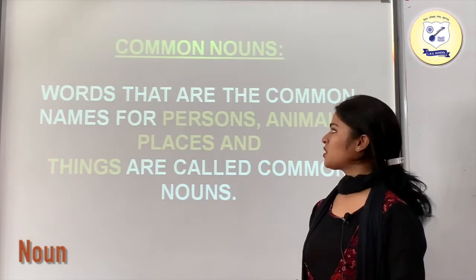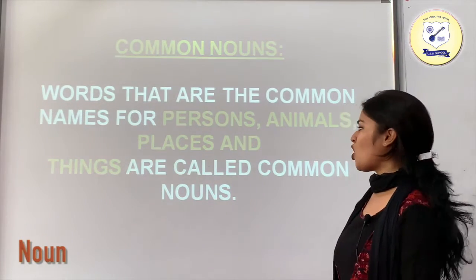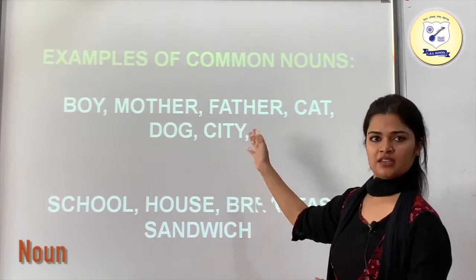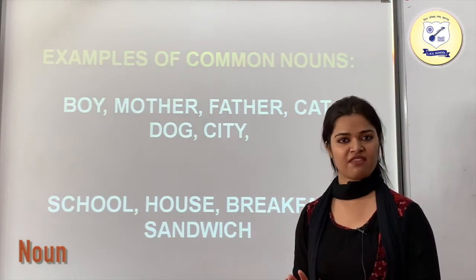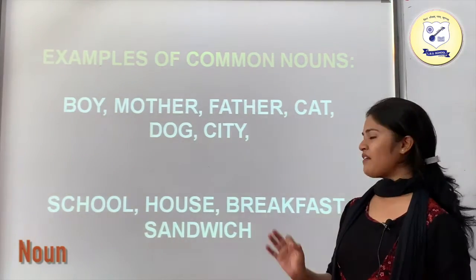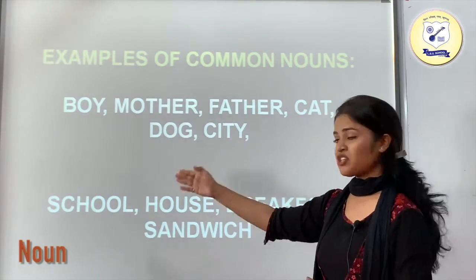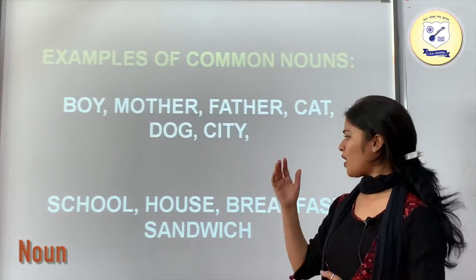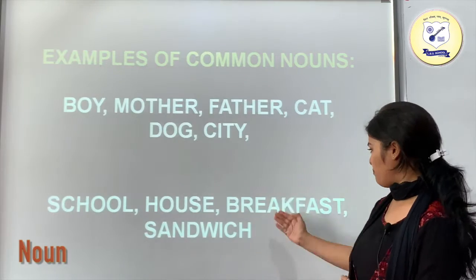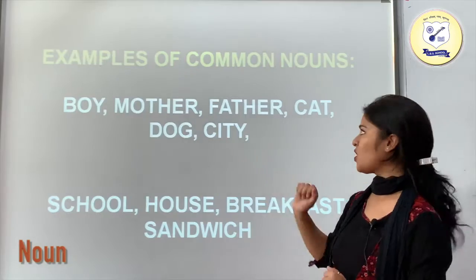Now we have common nouns. Words that are the common names for persons, animals, places and things are called common nouns. Examples are boy, mother, father, cat, dog and city. If I say city, I have not specified which city I am talking about, so it would be considered a common noun. Similarly, school, house, breakfast, sandwich — since we have not specified which particular one, we consider those common nouns.